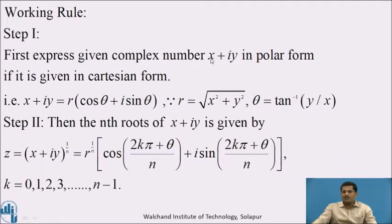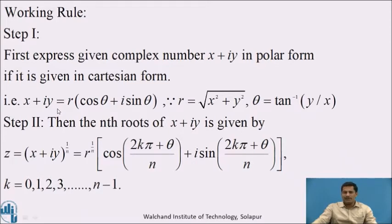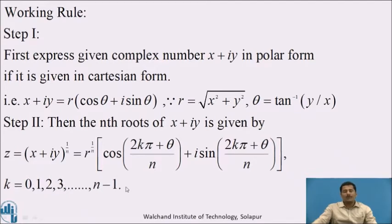Suppose we are given a complex number in Cartesian form x + iy. Its polar form is x + iy = r(cos θ + i sin θ), where r = √(x² + y²) and θ = tan⁻¹(y/x). Once we express the complex number in polar form, we apply the theorem: the nth root is z = (x + iy)^(1/n) = r^(1/n) [cos((2kπ + θ)/n) + i sin((2kπ + θ)/n)], where k = 0, 1, 2, 3, ..., n−1.